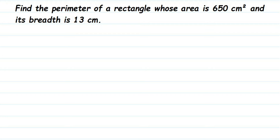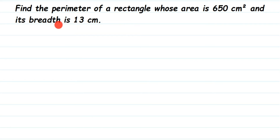Hey everyone, here's a question: find the perimeter of a rectangle whose area is 650 centimeter square and breadth is 13 centimeter. They have given the area and the breadth, and we know that to find out the perimeter we require the length.